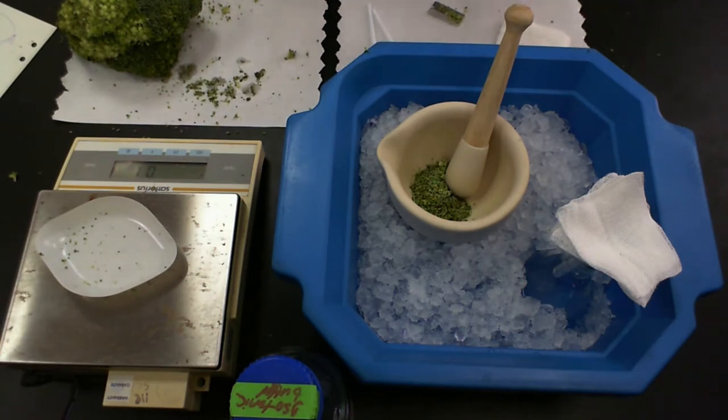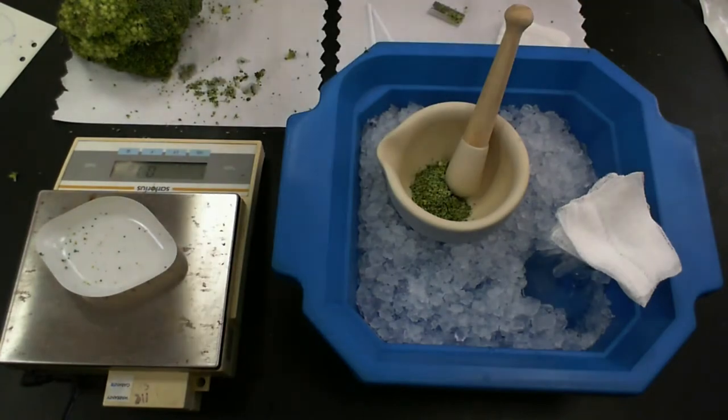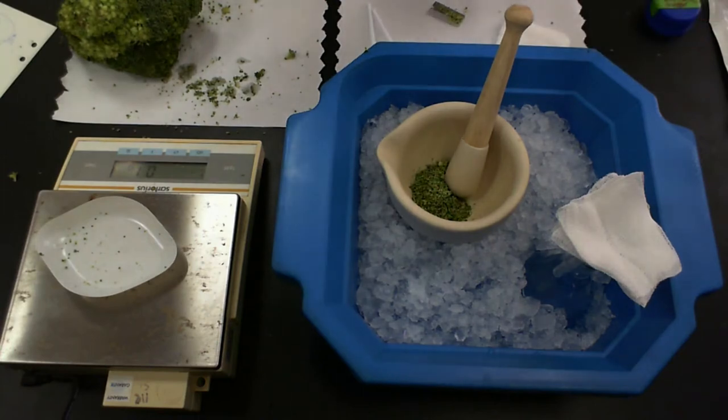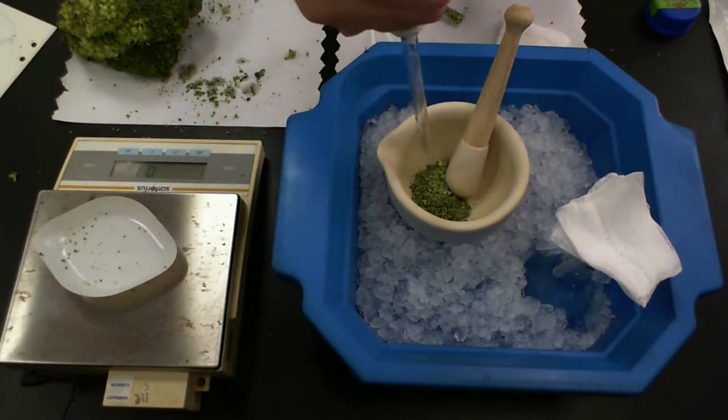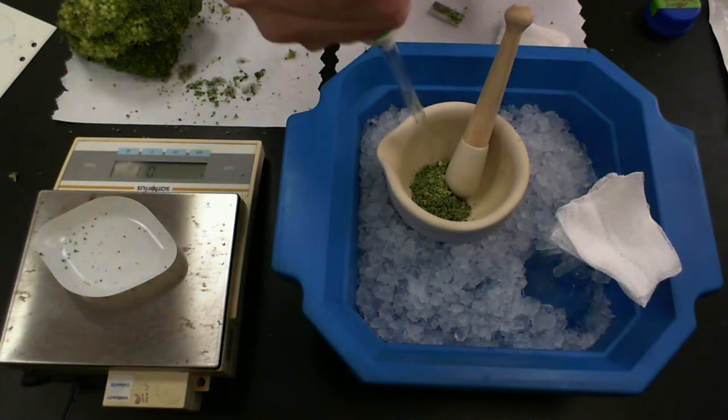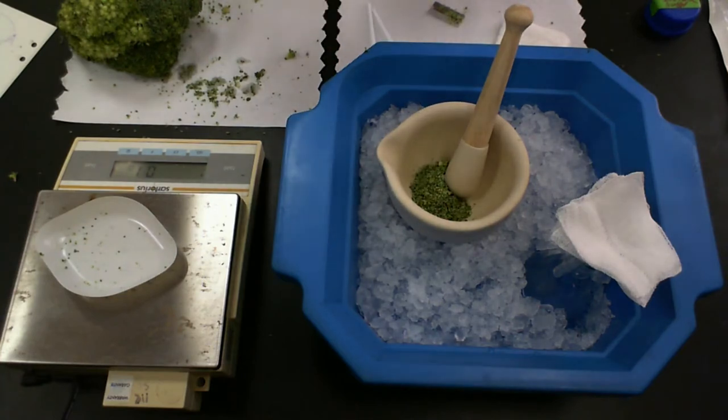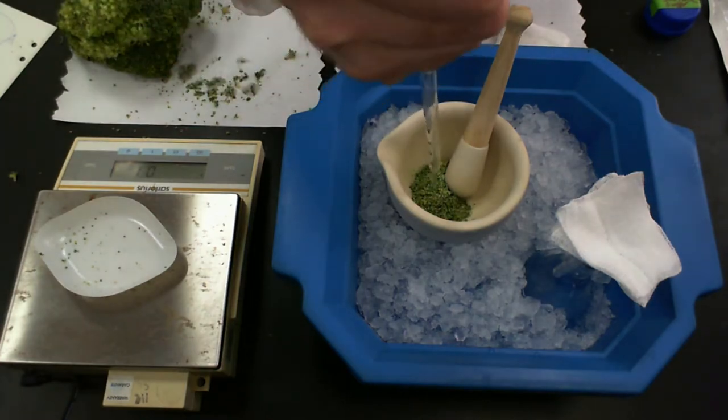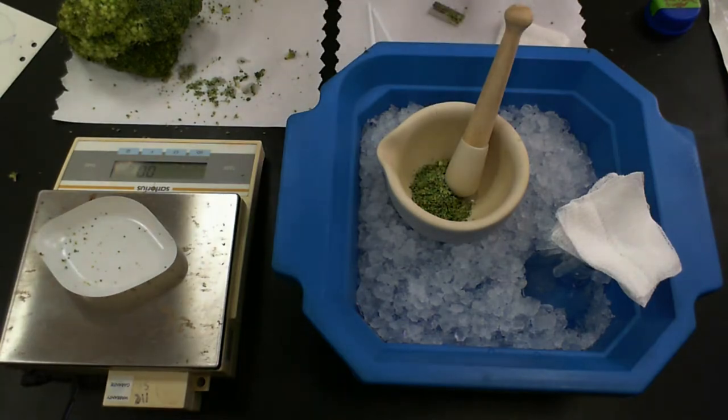And I can go ahead and add the appropriate volume of my buffer. So I have my isotonic buffer in here. I'm going to add initially just two milliliters, just so I have some liquid in there. Maybe a bit more. It's generally easier to work with smaller volumes initially, but I have a bit more tissue than I was expecting, so let's go with the full five.